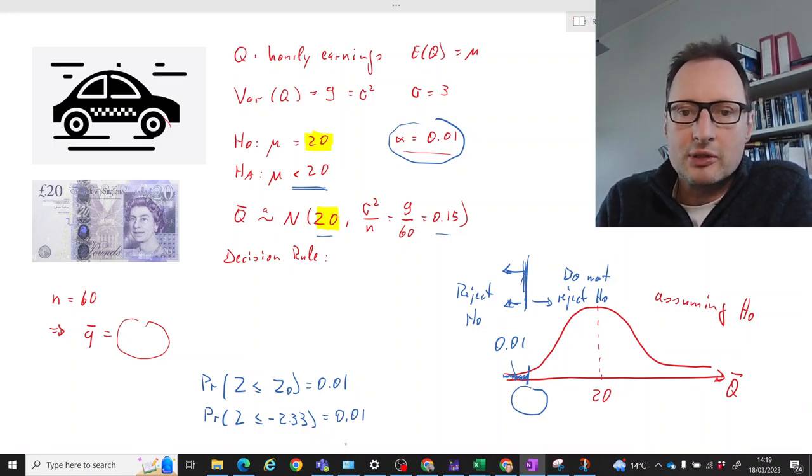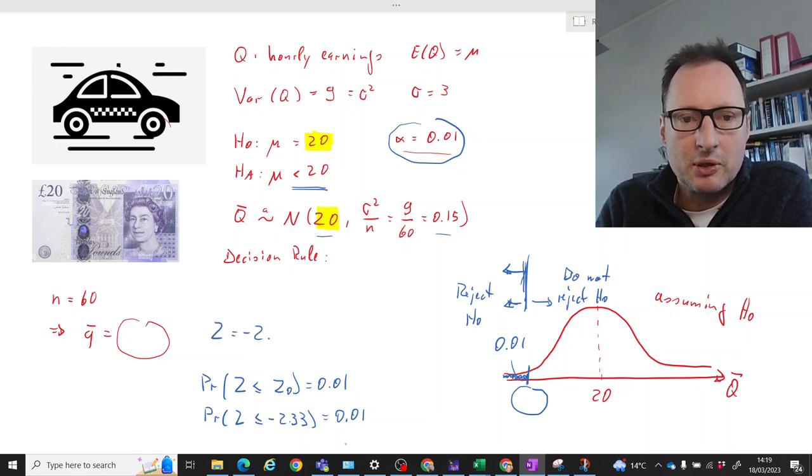So that means we will use our translation formula from z to Q bar in reverse. So we know that the z value is negative 2.33 and we want to know which is the Q bar zero which gives us that z value. Now our translation formula will use that mean, so Q bar zero minus 20, and it will use the standard error which is the square root of 0.15.